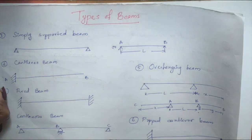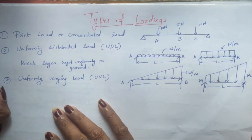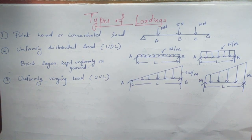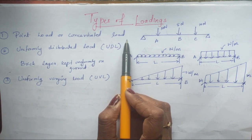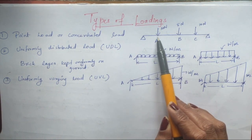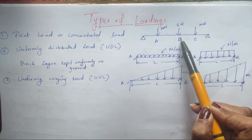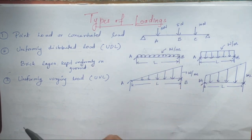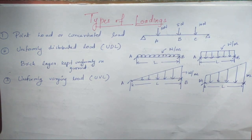Now the next topic concerns the loads acting on all these beams. A beam is a horizontal structure, and there will be loads acting on it. There are three types of loads. The first one is point load or concentrated load, which is concentrated at one particular point. For example, 10 N at A, 5 N at B, and 10 N at C on a simply supported beam. Normally in problems, we deal with point loads.